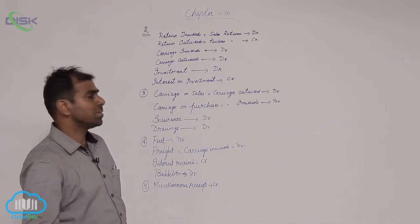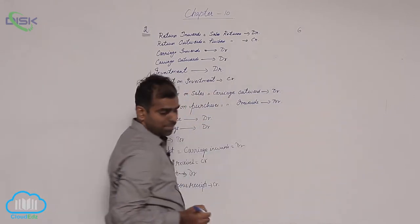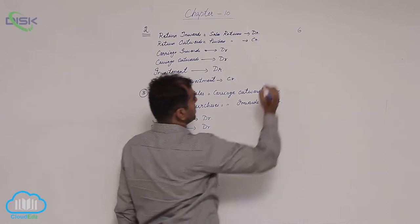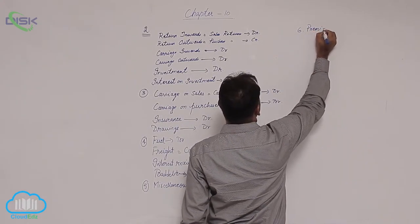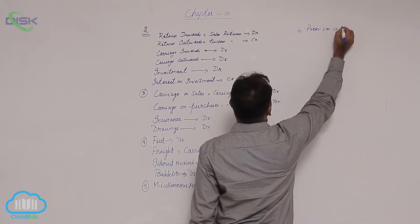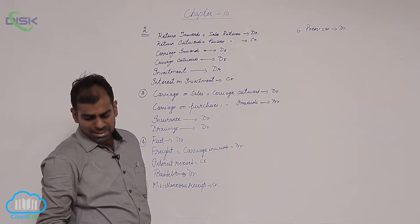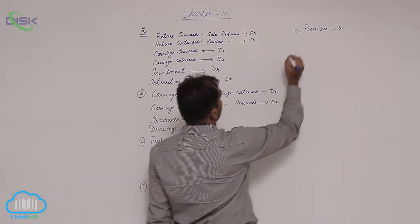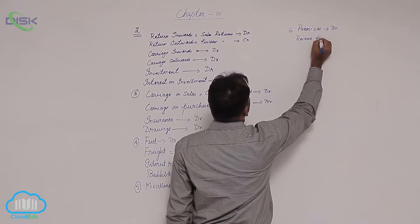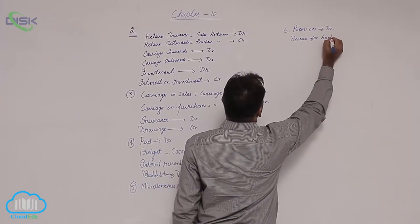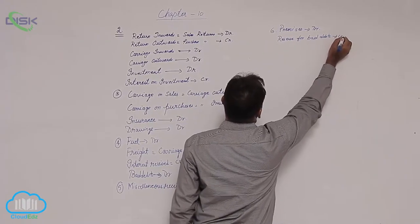Moving on to the sixth problem, we have premises. Premises is nothing but your buildings, etc. Since they are assets, they show debit balances. Next in the same problem, you have reserve for bad debts. Any reserve always shows credit balance, so remember that.